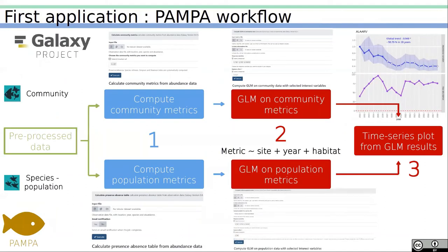This methodology has been entirely applied through the implementation of the POMPA workflow, which uses pre-processed biodiversity data to compute metrics either at population or community levels. It then performs a generalized linear model on those metrics that tests the effects of site, year, and/or habitat on a chosen metric. These results can then be represented through a time series plot with the last tool.